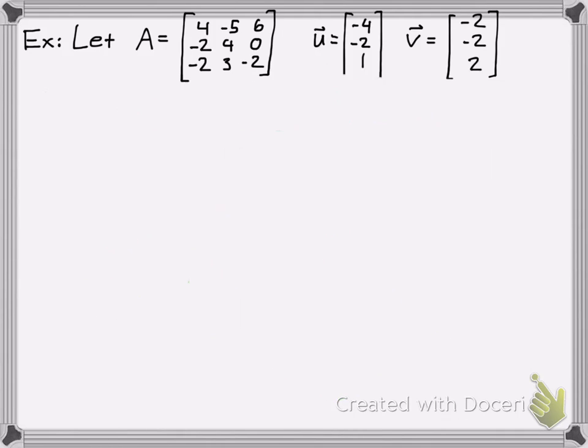So all you've got to do is check if the vector multiplies with the matrix to give you 0. So we have A, and we have two vectors, U and V. So again, Ax equals 0. Here's our two x's, or our two vectors, U and V. We'll start with U.